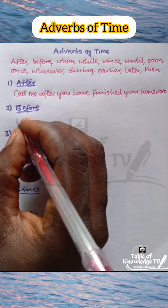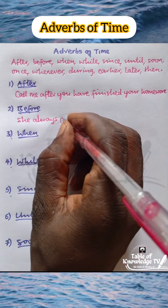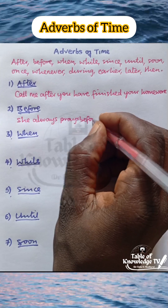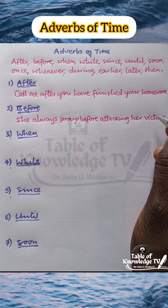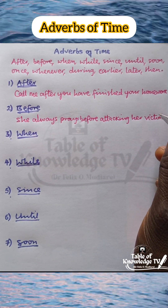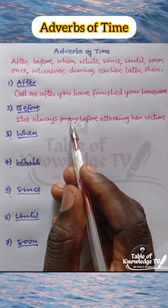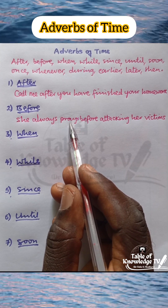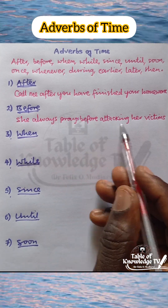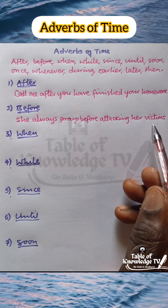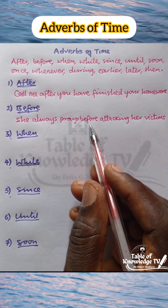Number two: before. Sentence — She always prays before attacking her victims. When does she pray? She prays before attacking her victims. 'Before' is an adverb of time.